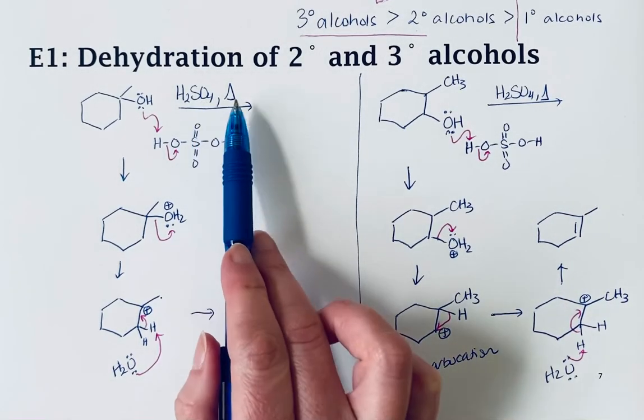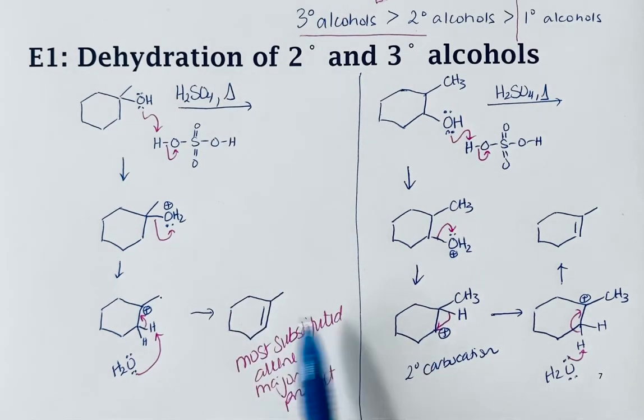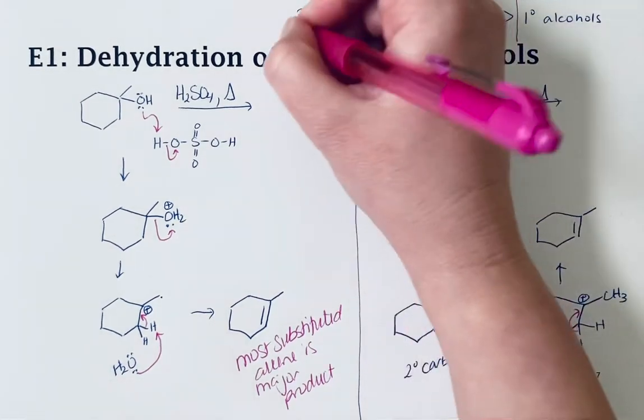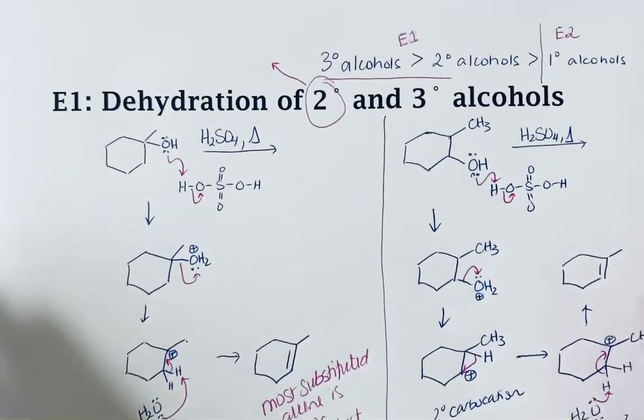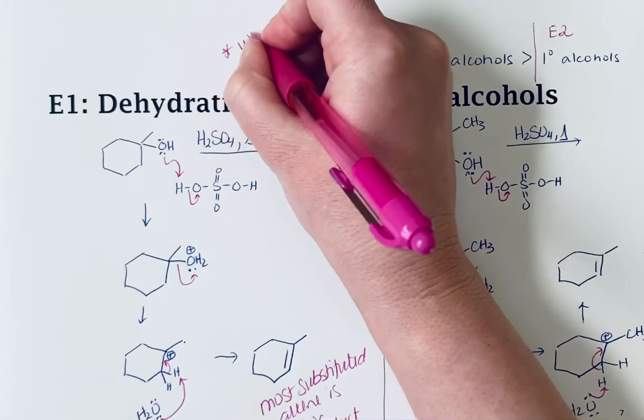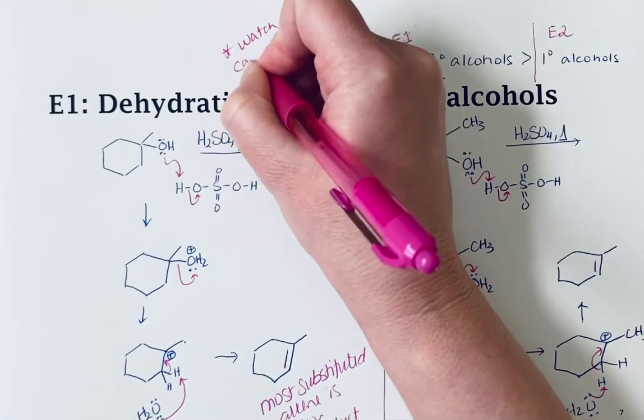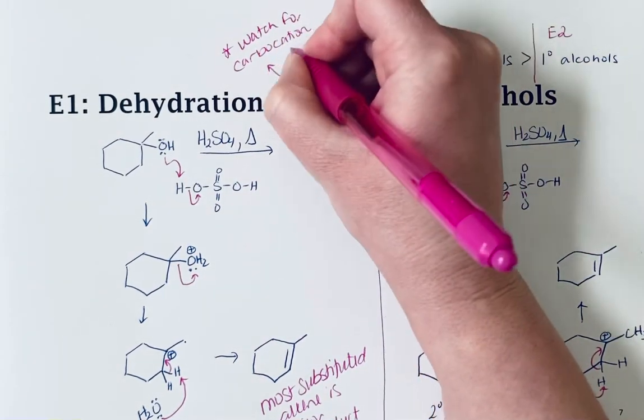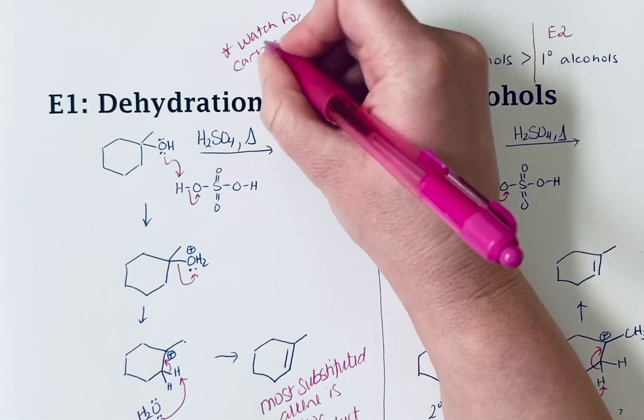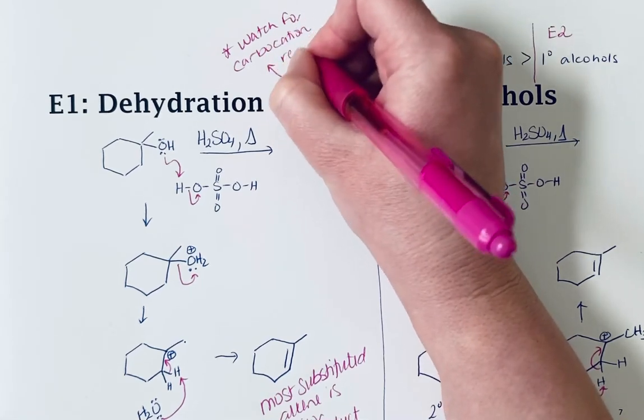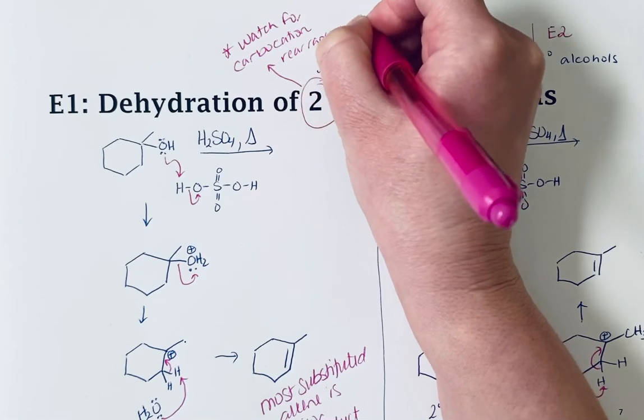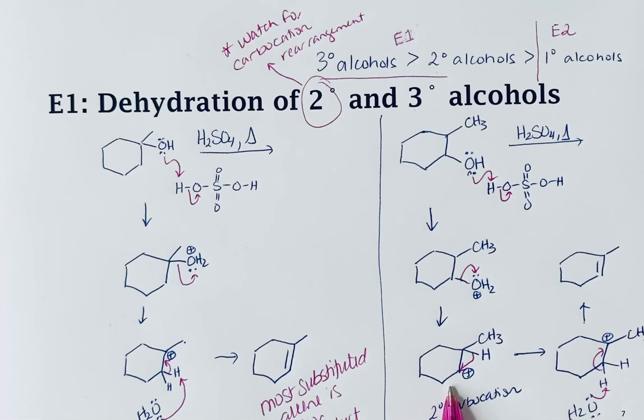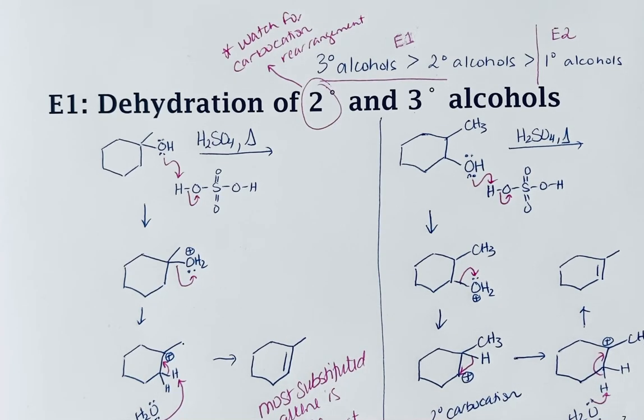What we've seen is we need acid and heat, we're going to form the most substituted alkene as the major product, and particularly with secondary alcohols, we need to watch for carbocation rearrangements. In this case, we didn't change the carbon skeleton, but sometimes if we move a methyl group, you can have the carbon skeleton rearrange. Even if you're not asked to draw a full mechanism, I recommend always drawing the cation so you can see if it's likely to rearrange.